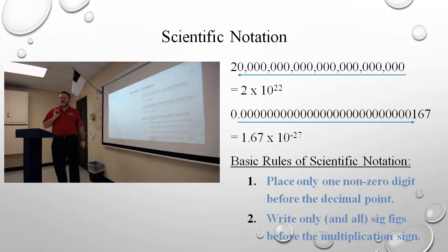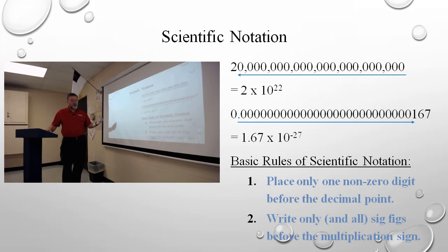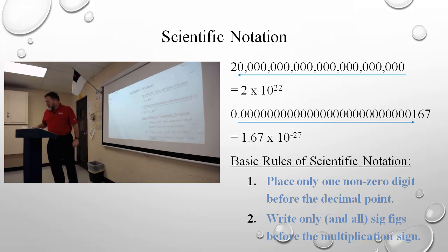The first non-zero has to be the first number. These are in your book — the two basic rules for scientific notation. So we're going to go through example 16, both parts A and B, then On Your Own's 13 and 14.